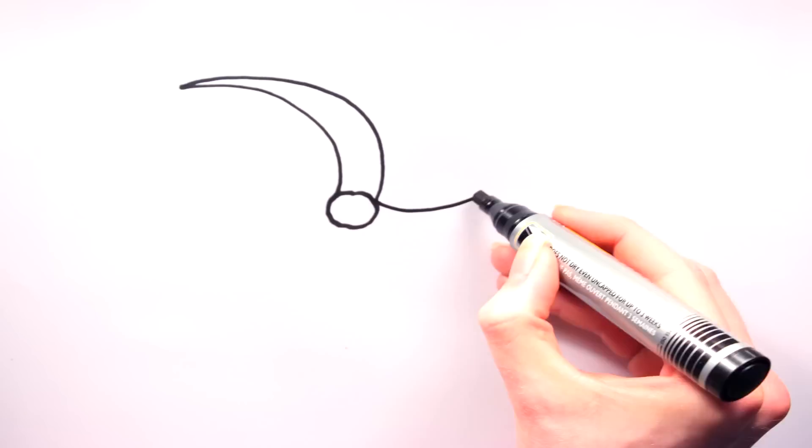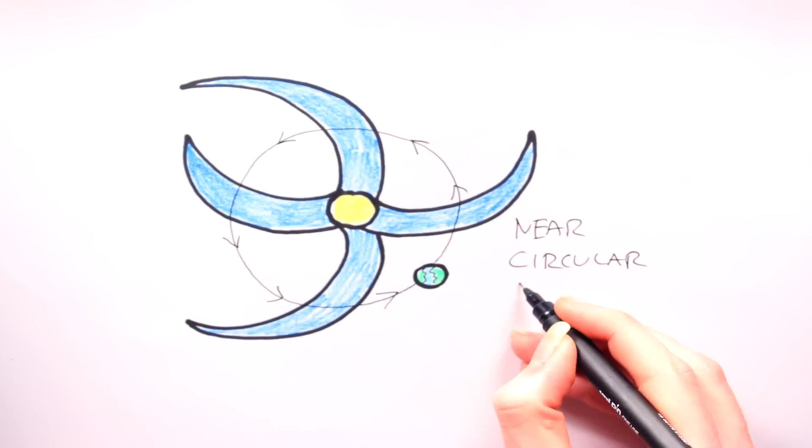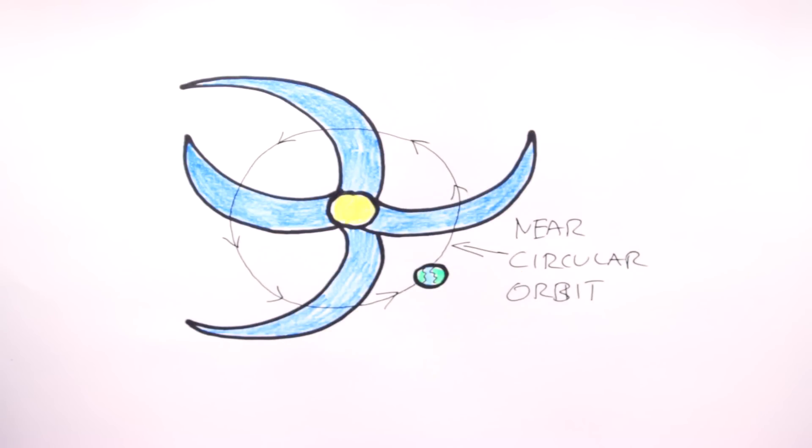4. In order to stay ahead of the arms, your planetary system must orbit the galactic center in a near-perfect circle.